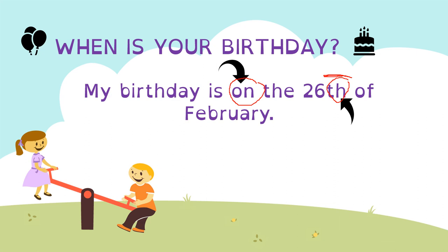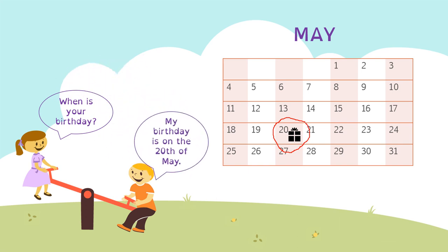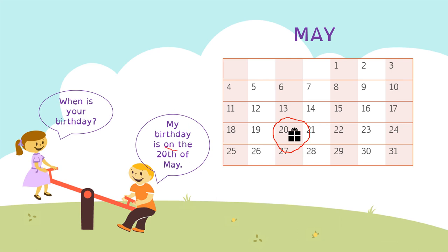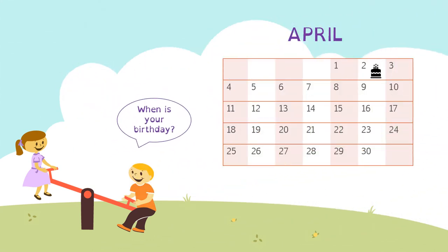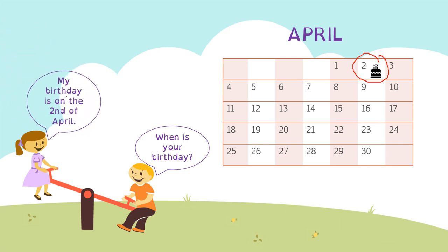Let's practice a little bit. When is your birthday? How do you say this? My birthday is on the 20th of May. Very good! One more — when is your birthday? You have to say: my birthday is on the 2nd of April. Be careful — this number is different, it's the 2nd of April. So now you can practice with your own birthday if you want.